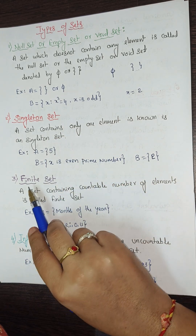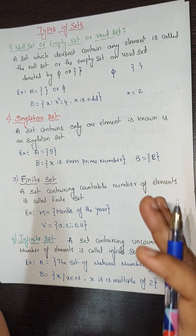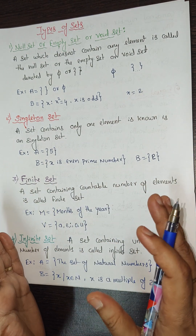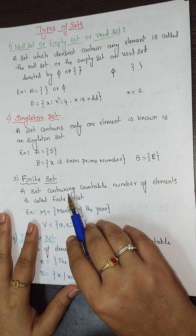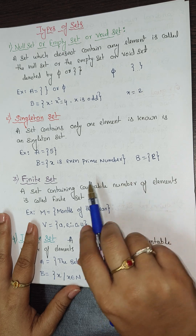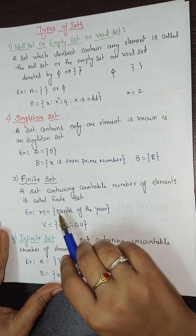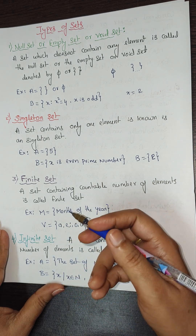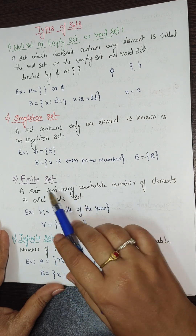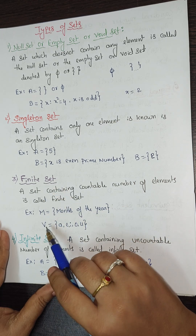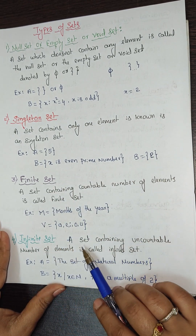Next is finite set. Finite means countable. A set containing a countable number of elements is called a finite set. For example, months of the year — we can count them, there are only 12 (January, February, etc.). Vowels of the English alphabet are also countable, so that is also a finite set.